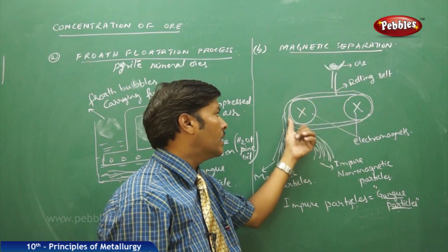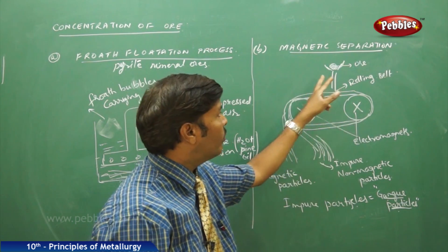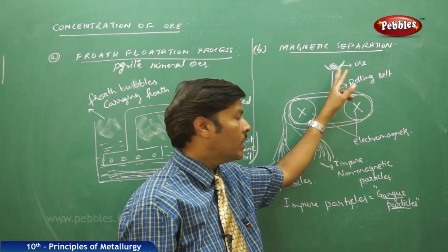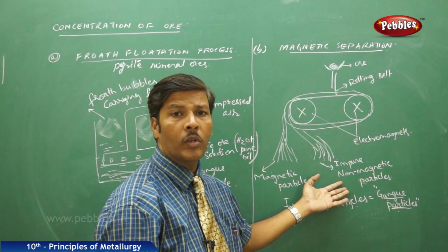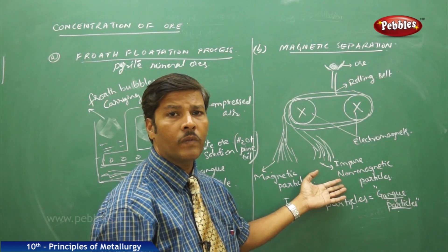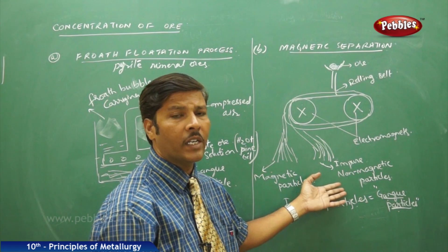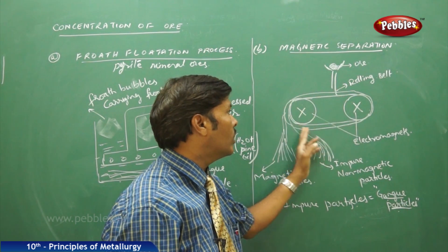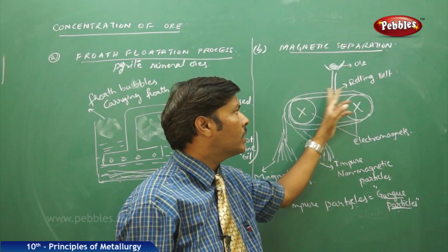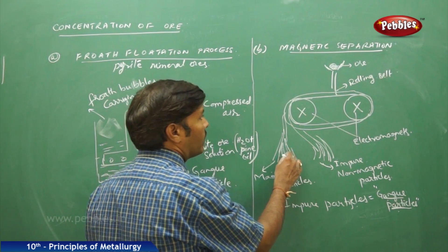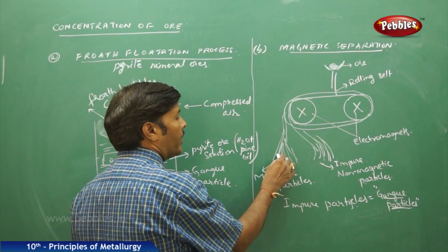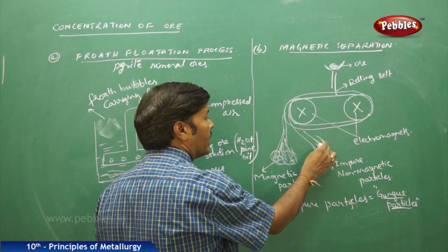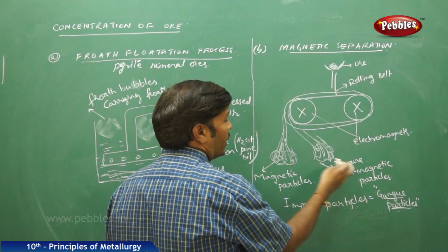These two electromagnets are fitted with a rolling belt and we take a small funnel. In that funnel we place the crushed mineral ore — usually oxides of iron — because the impurities in the oxides of iron contain non-magnetic impurities. When the crushed mineral ore rolls over the moving belt, all the magnetic particles of the mineral ore form a separate heap, while all the non-magnetic impurities form another heap, separated by a certain distance.